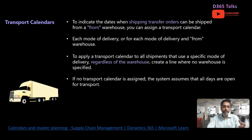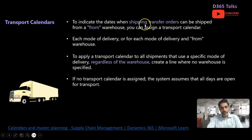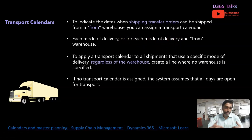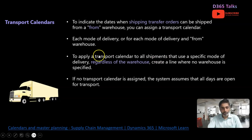The ship date is based on the transport calendar of the from-warehouse, and the receipt date is based on the to-warehouse calendar configured. To indicate the dates when shipping transfer orders can be shipped from your from-warehouse — that is what is configured here. For each mode of delivery from your from-warehouse, depending on whether you deliver by road, air, or rail, you define the mode of delivery and for each mode and each warehouse you can define the transport calendar.